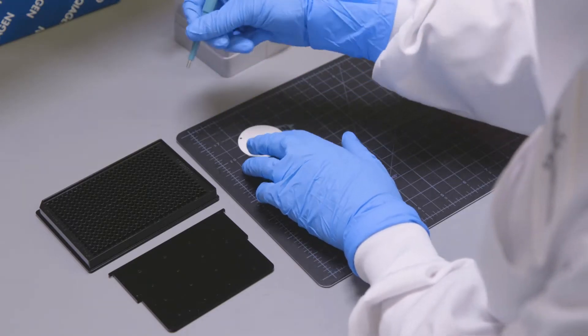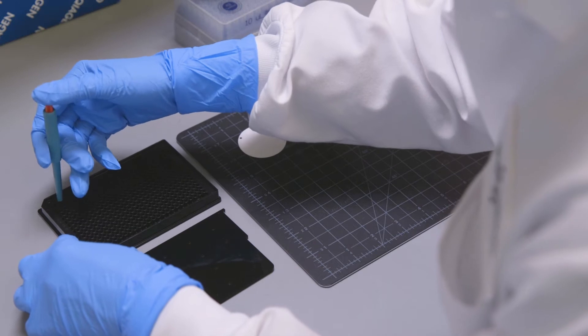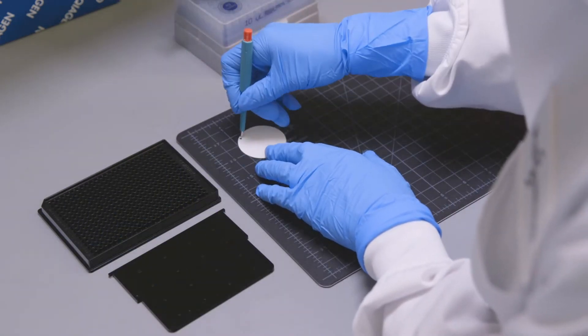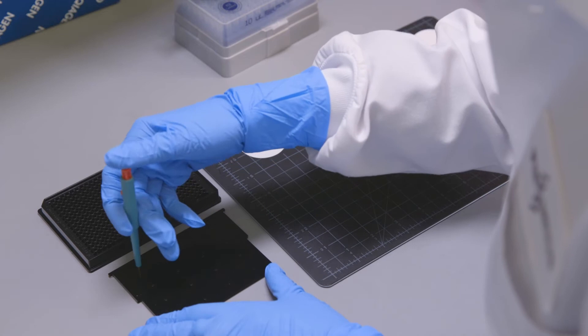The first step is to cut the paper. We use a biopsy punch to cut out paper disks, which can be placed into a 384-well plate or a cartridge for the electronic reader.